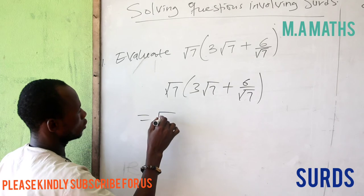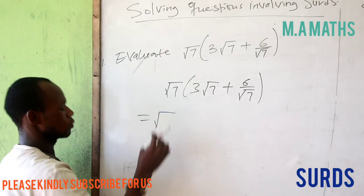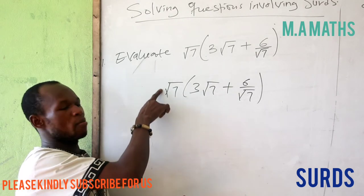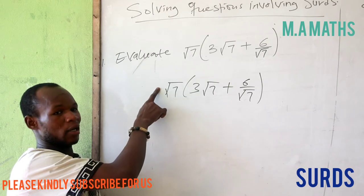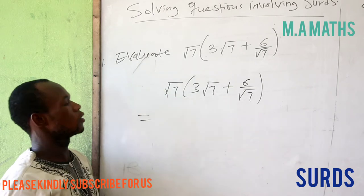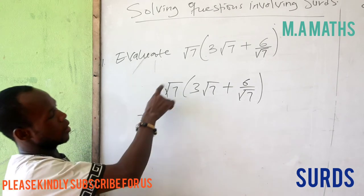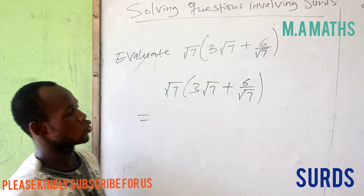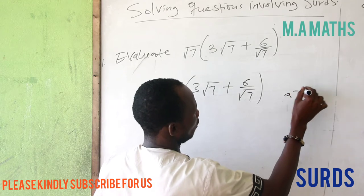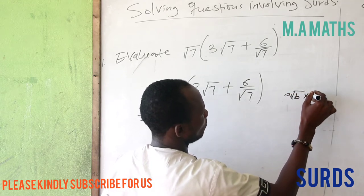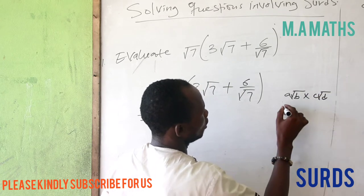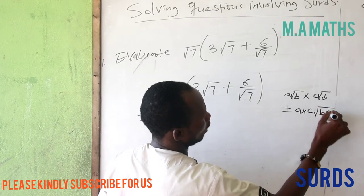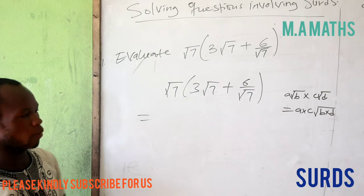This will give me √7 times this. When multiplying the coefficient outside the radical sign and the number under the radical sign, if I have a√b multiplied by c√d, this will give me a times c and b times d.